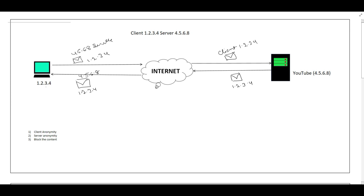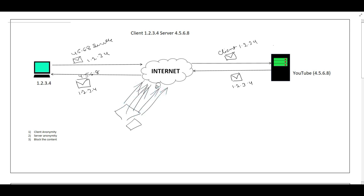This is how the basic flow works, but let's think about what problems can arise from each party knowing the other's address. If a hacker gets to know the YouTube server address, he can perform a DDoS attack — sending a large number of malicious requests to the server through the internet. The server will start getting flooded with requests and will go down, so real users will not get service from YouTube.